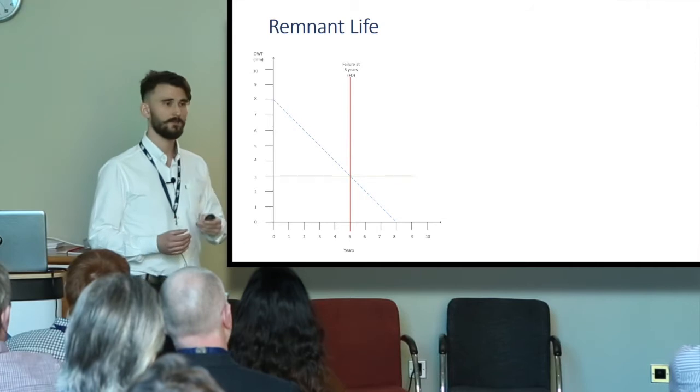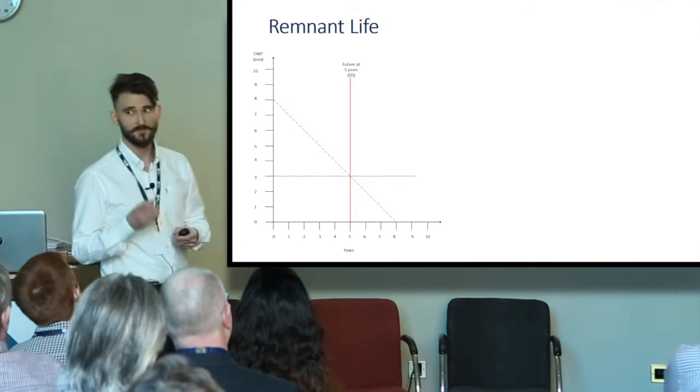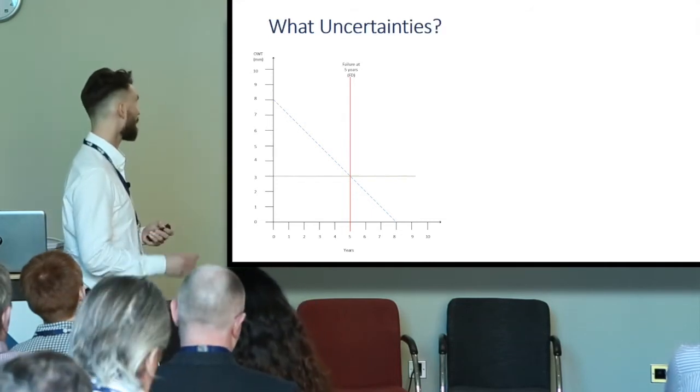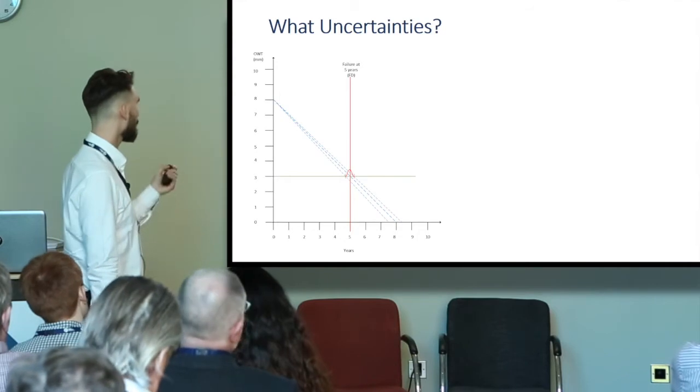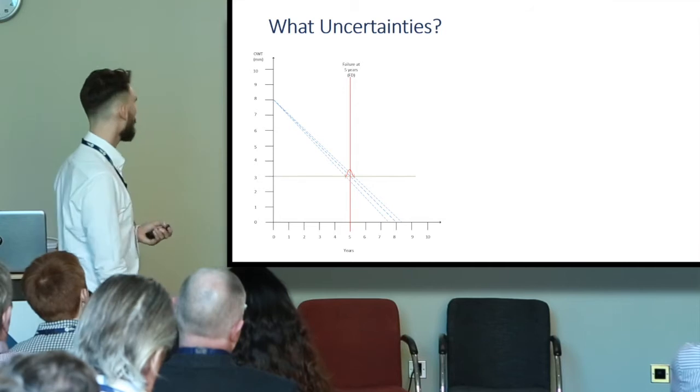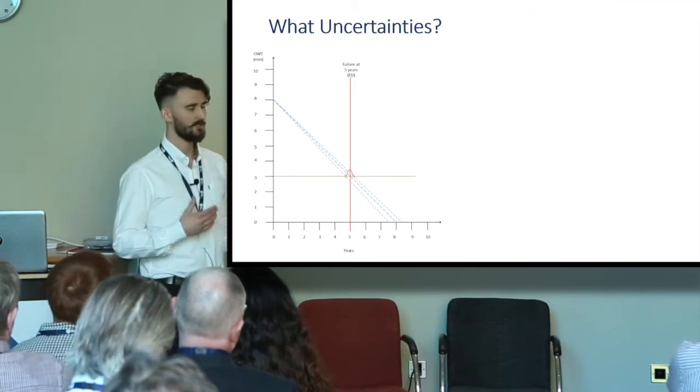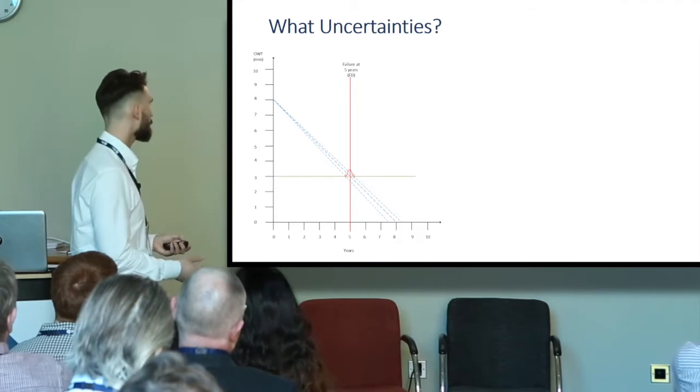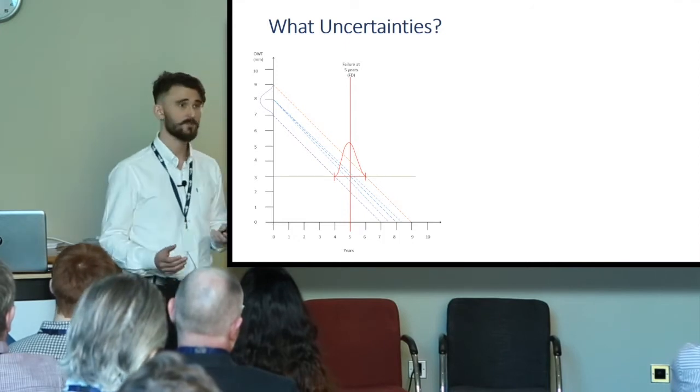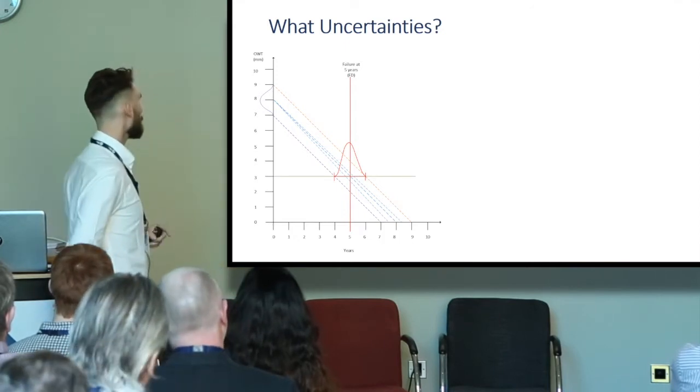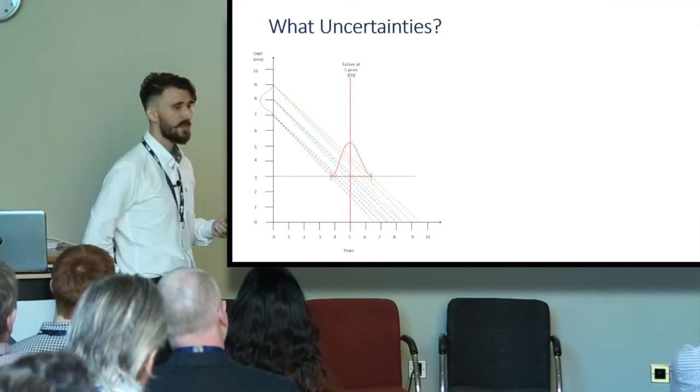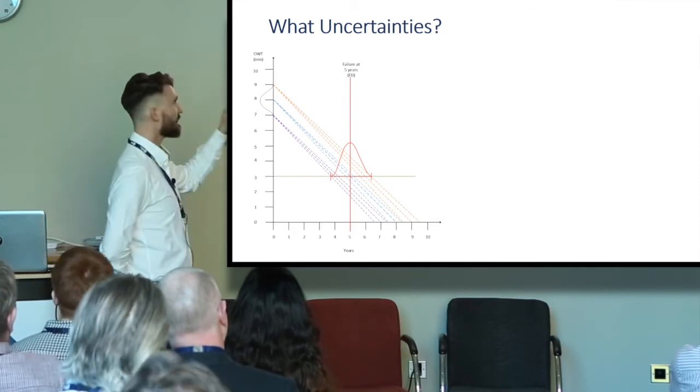Mainly it's down to the fact that those input values we've put there have some uncertainties around them. So what do I mean by this? Let's take the corrosion rate. I've said I think it's one millimeter per year. However, in this scenario I've actually seen corrosion rates up to 1.5, maybe as low as 0.5. The original wall thickness due to milling tolerances and inspection tolerance, pinning that down to eight millimeters, let's say in this case it's as high as nine, as low as seven.